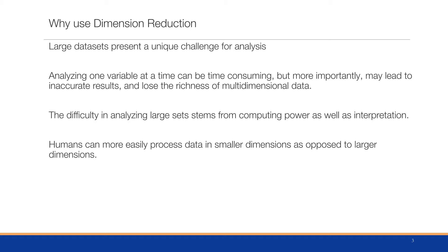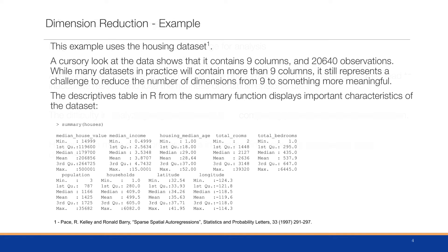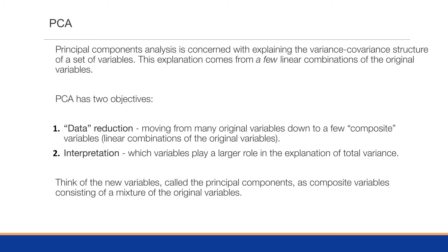Humans can more easily process data in smaller dimensions as opposed to larger ones. We'll start with an example — the housing data set, which is available on a number of different sites and we'll make it available on the blog as well. A cursory look shows it contains nine columns and twenty thousand observations. Running summary statistics in R, we can see the descriptives table telling us about the particular columns, which are all continuous variables.